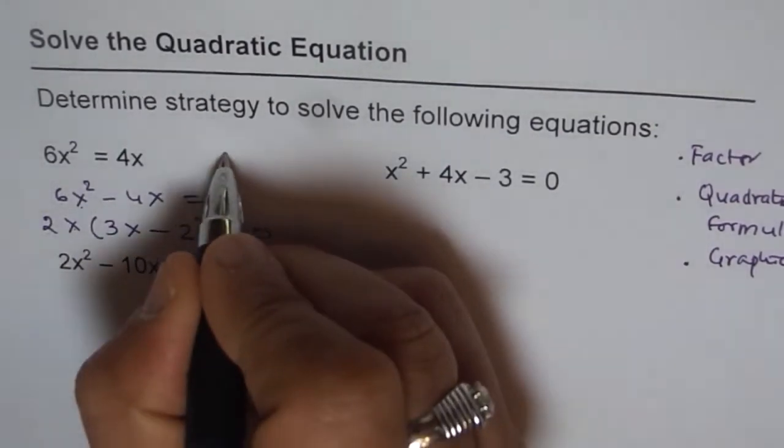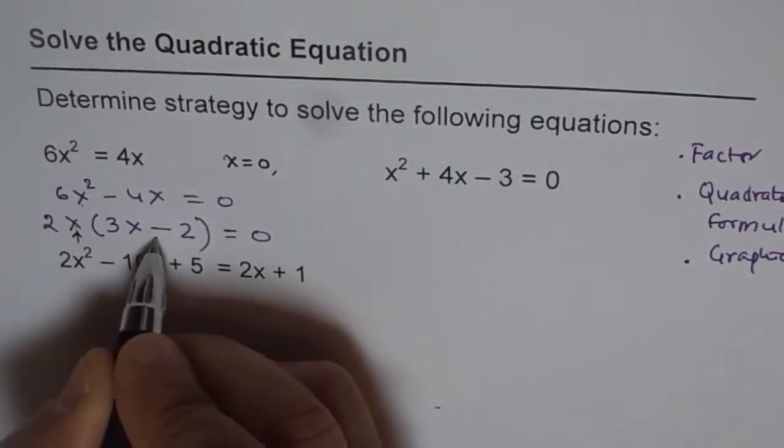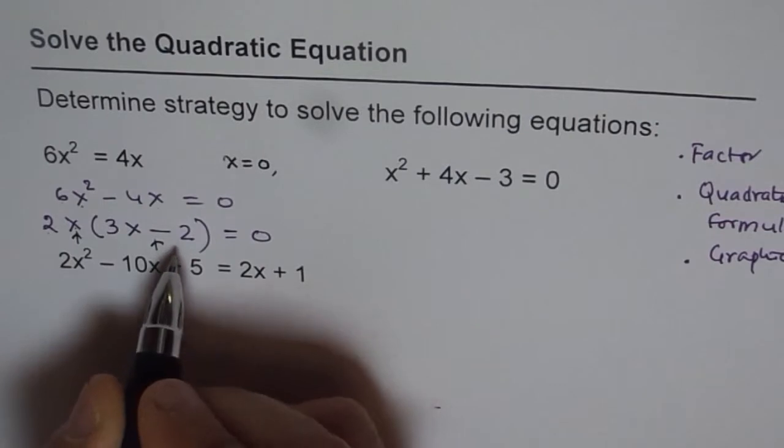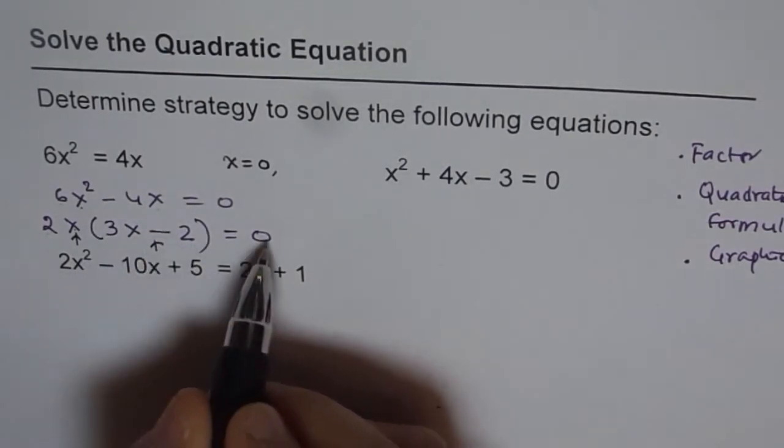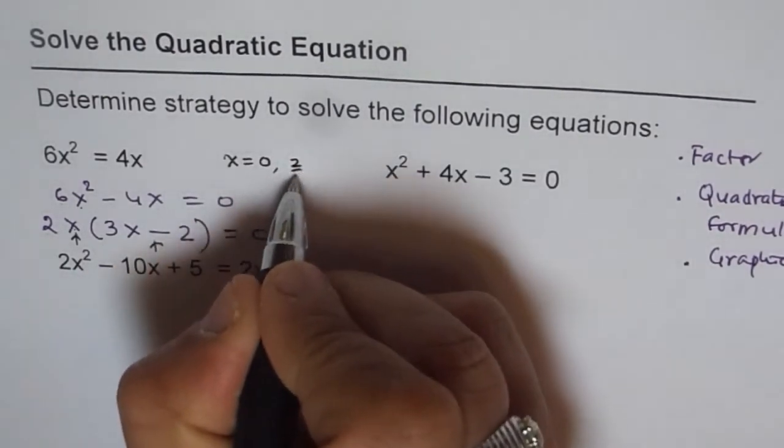But x could be 0. So that becomes our first solution. So first solution is x = 0, which we get from here. And then this factor could also be 0. And this is 0 equated to 0. Take 2 on the other side, divide by 3. So we get x = 2/3.